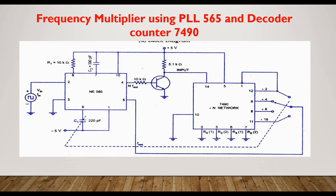In this circuit, the input voltage V_in is connected to pin number 2, where the input frequency F_in is compared with F_out at pin number 5. The output at pin number 4 is connected through an interface circuit to give an output at pin number 14 of the 7490 IC. The signal at pin number 4 is connected through an interface circuit which varies between 0 and +5V.